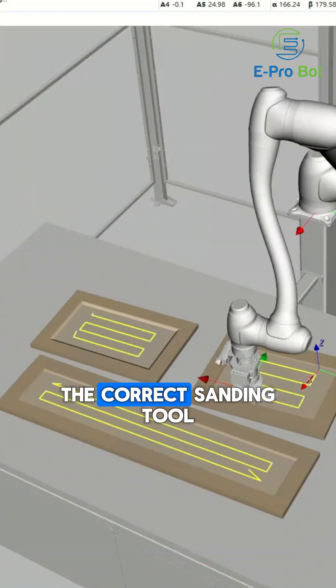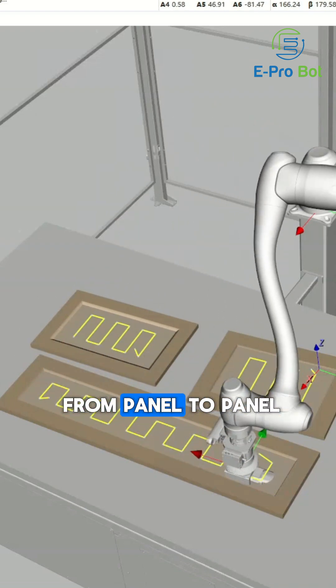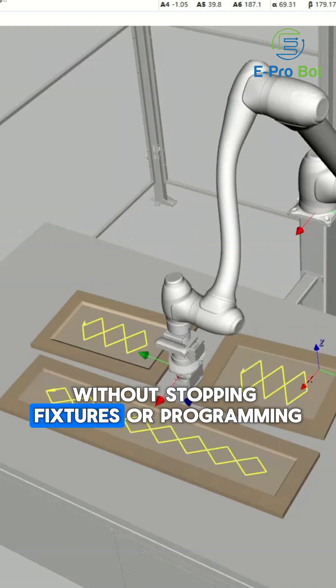The robotic arm selects the correct sanding tool and uses AI path planning to move from panel to panel without stopping, fixtures, or programming.